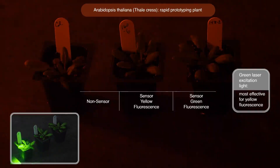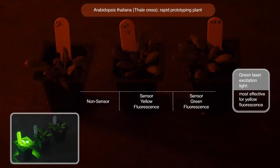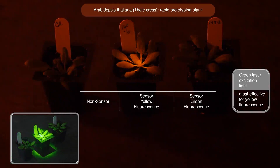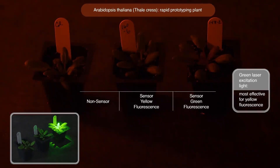Illumination of the first unmodified Arabidopsis plant with a green laser shows no fluorescence. However, as the laser moves to the next plant, a bright yellow fluorescence is clearly visible. This laser and filter do not show fluorescence in the third plant, because a different color laser and filter are needed to optically view green fluorescence.